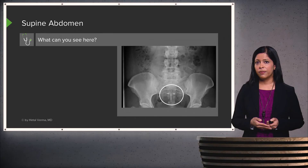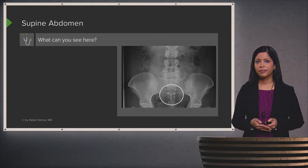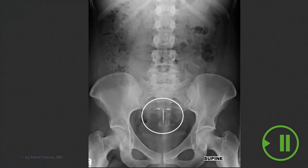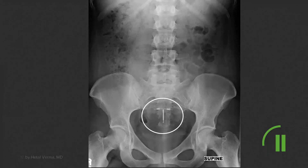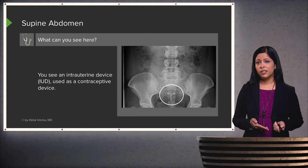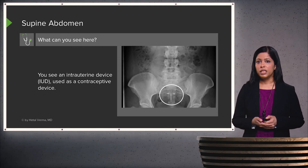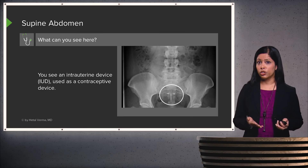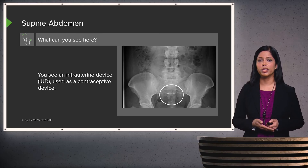Incidentally, this patient has a finding in their pelvis. This is actually an intrauterine device, or IUD — used as a contraceptive device and very commonly seen in women. It's a T-shaped metallic structure, which is why it appears so dense — actually a little bit more dense than the surrounding bony structures.